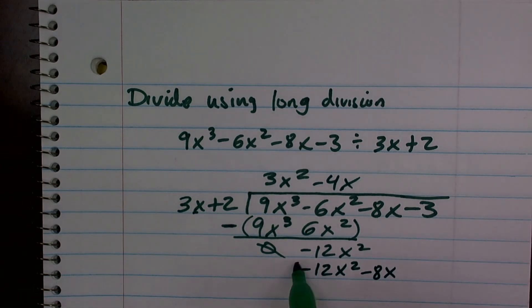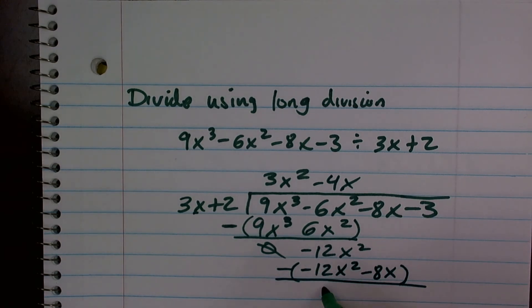Then again, I subtract the whole row. So negative 12x squared minus negative 12x squared gives me 0. Now I bring down the negative 8x. Negative 8x minus negative 8x gives me 0.